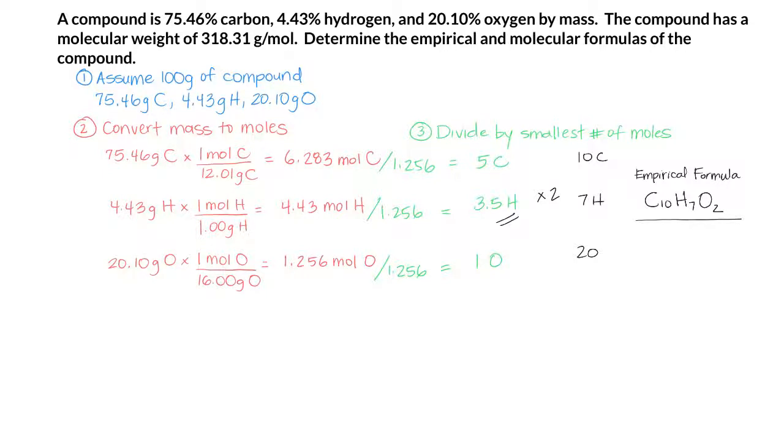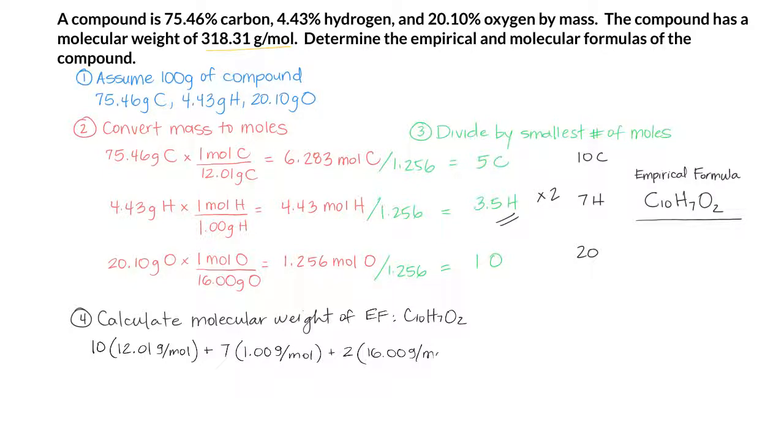Now that we have our empirical formula, we can use the molecular weight information given in the problem to determine the molecular formula. Let's first calculate the molecular weight of our empirical formula. We have 10 carbon, and we know the molar mass is 12.01 grams per mole. We have 7 hydrogen, each is 1 gram per mole, and 2 oxygen, each 16 grams per mole. And this tells us our empirical formula has a molar mass of 159.1 grams per mole.